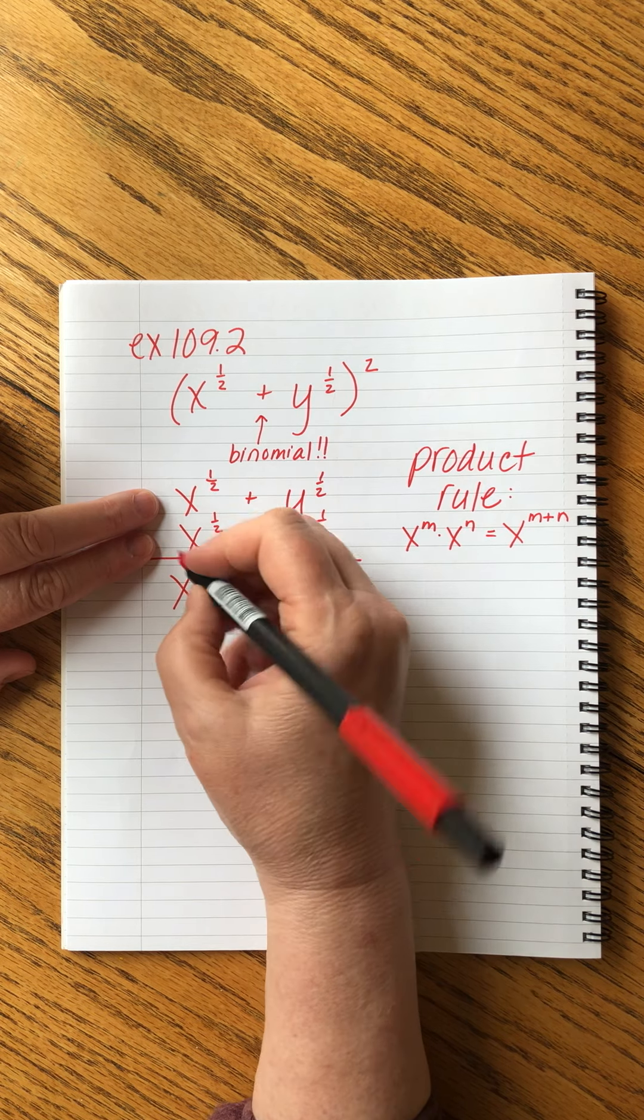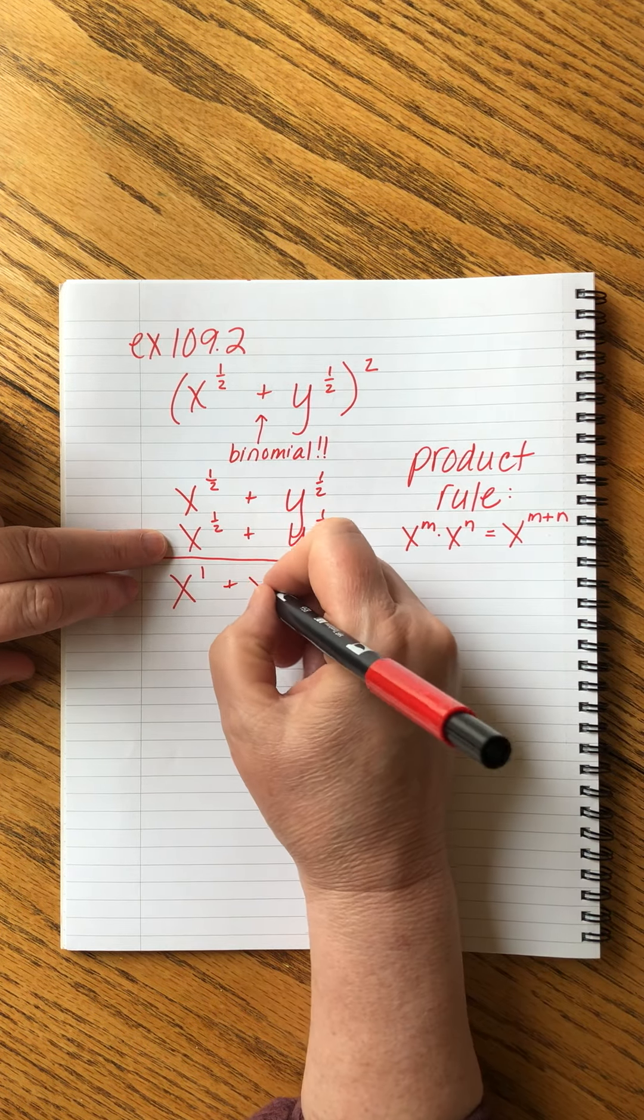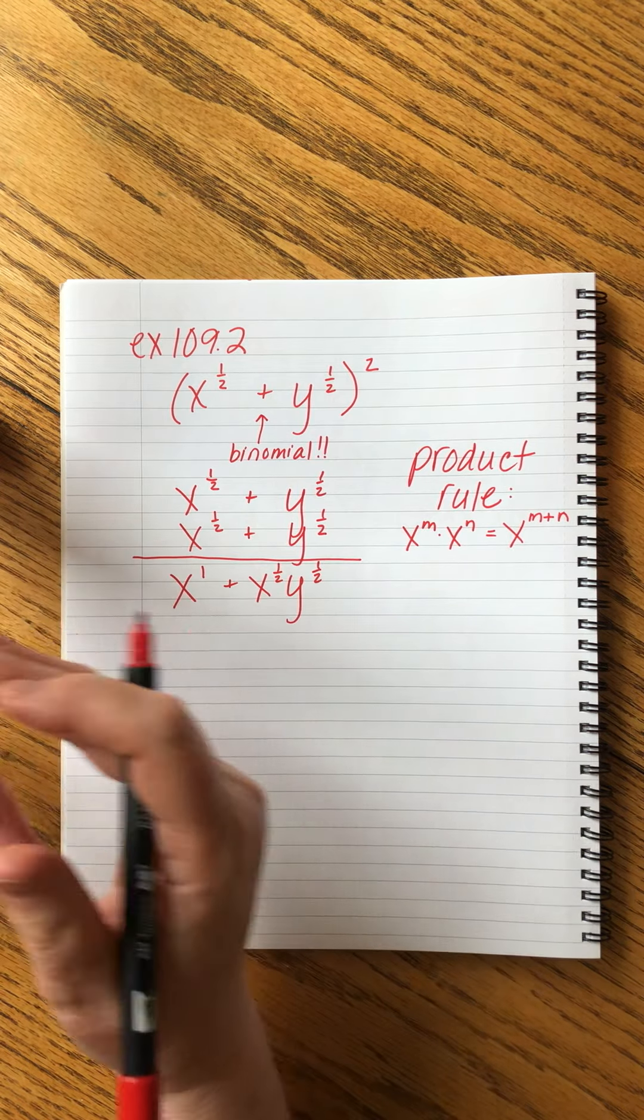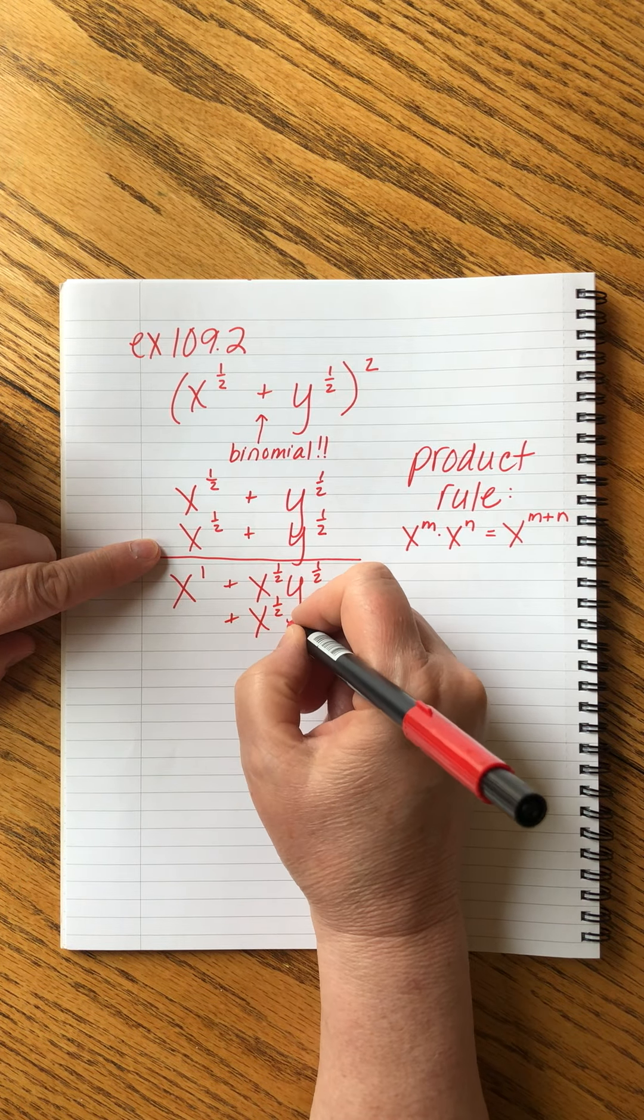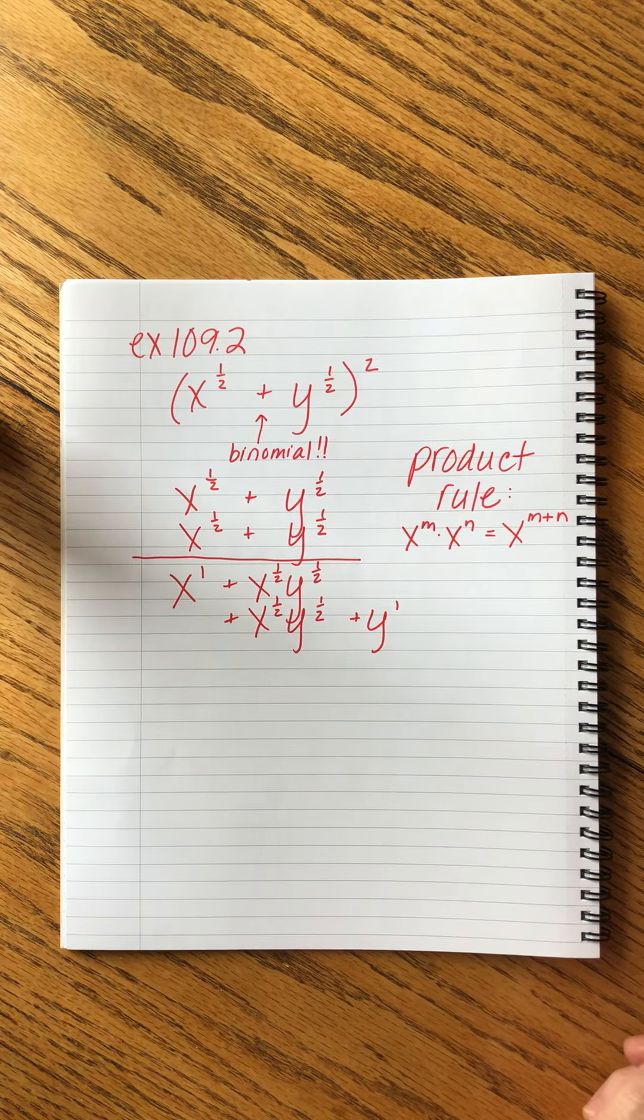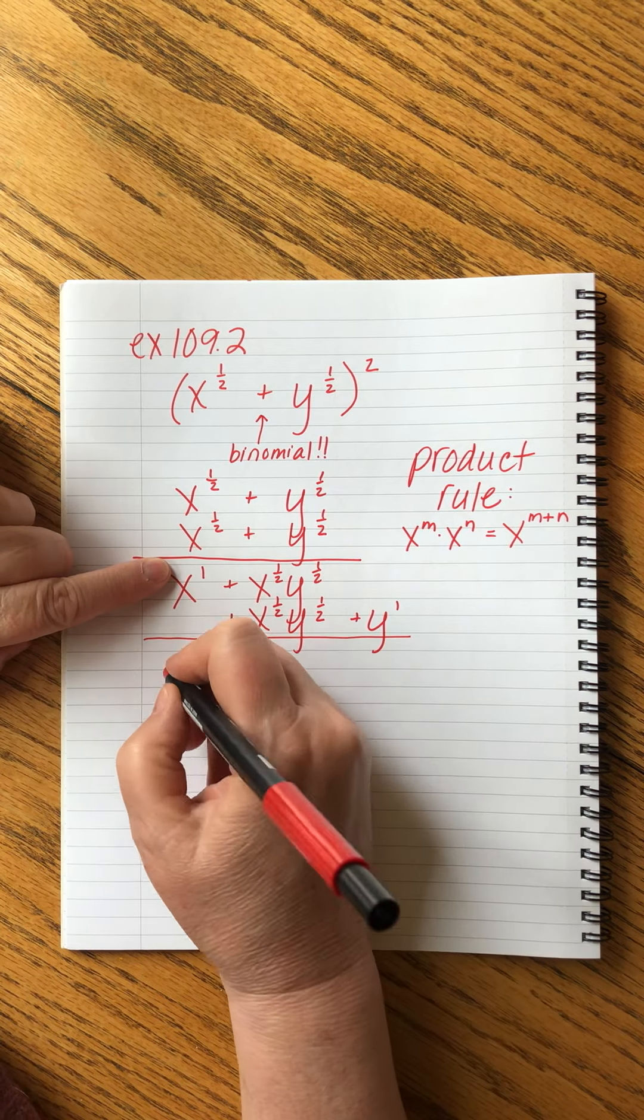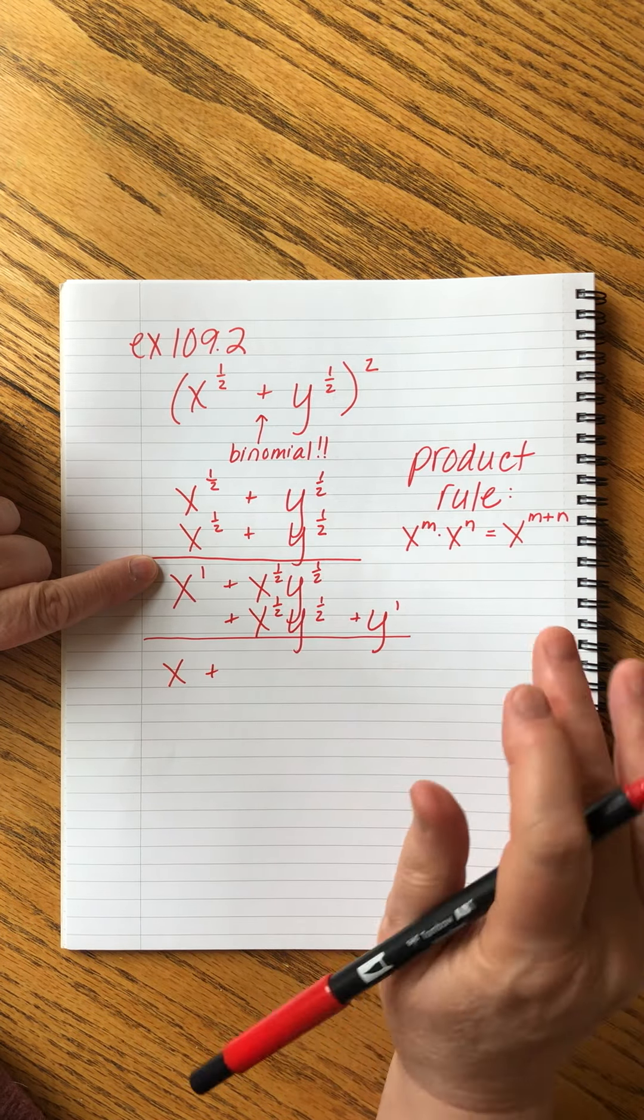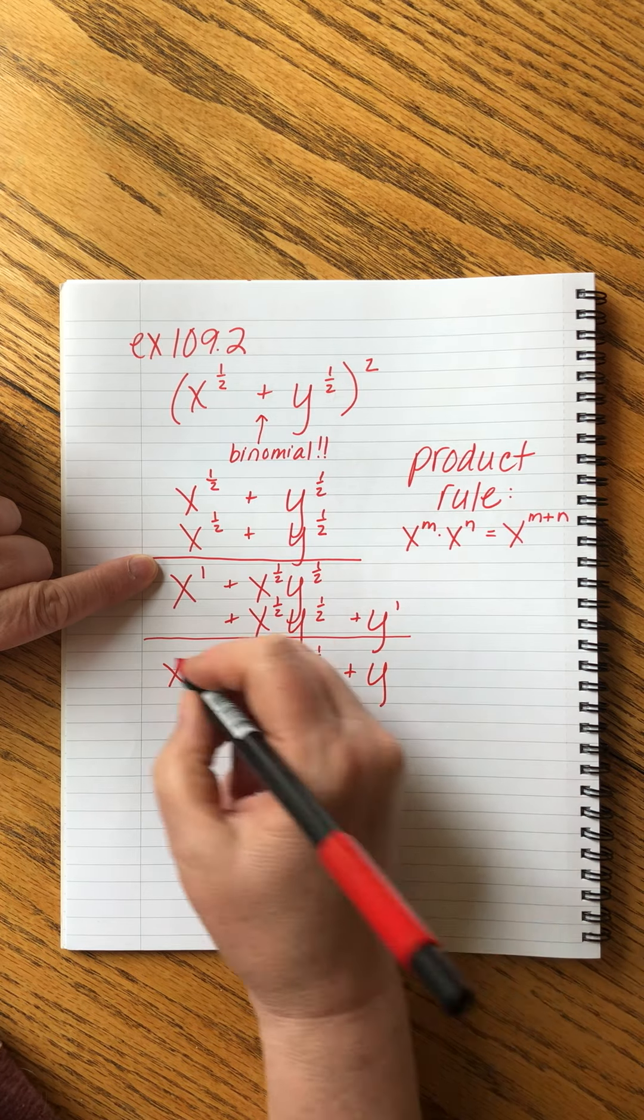So here we go. This, we add the exponents. One half plus one half is one. I'm going to put the one there just so I'm clear. Now when I multiply this way, I don't have matching bases. So this I can't change. It just stays X to the one half, Y to the one half. It's a product because we're multiplying those, but I can't squish them together. This girl's turn. Another one of these mish-mashies, and when I multiply this, I add the exponents, and I get Y to the one. Our last step is to add them. So I'm going to have X plus... Now, we have two of these things, don't we? So we can add them together. We'll have two X to the one half, Y to the one half, plus Y. And that's our final answer.